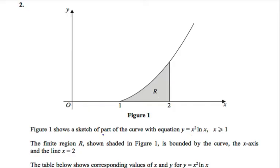Question 2. Figure 1 shows a sketch of part of the curve with equation y equals x squared ln x, for x greater than or equal to 1. The finite region R, shown shaded in figure 1, is bounded by the curve, the x-axis and the line x equals 2.